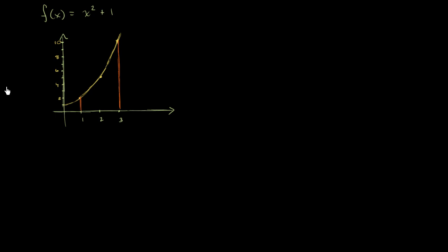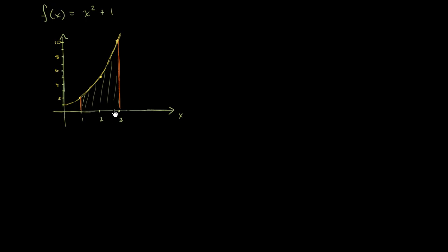What we're going to try to do in this video is approximate the area under the curve y equals x squared plus 1, between the interval x equals 1 and x equals 3. We're going to approximate it by constructing four rectangles under the curve of equal width.